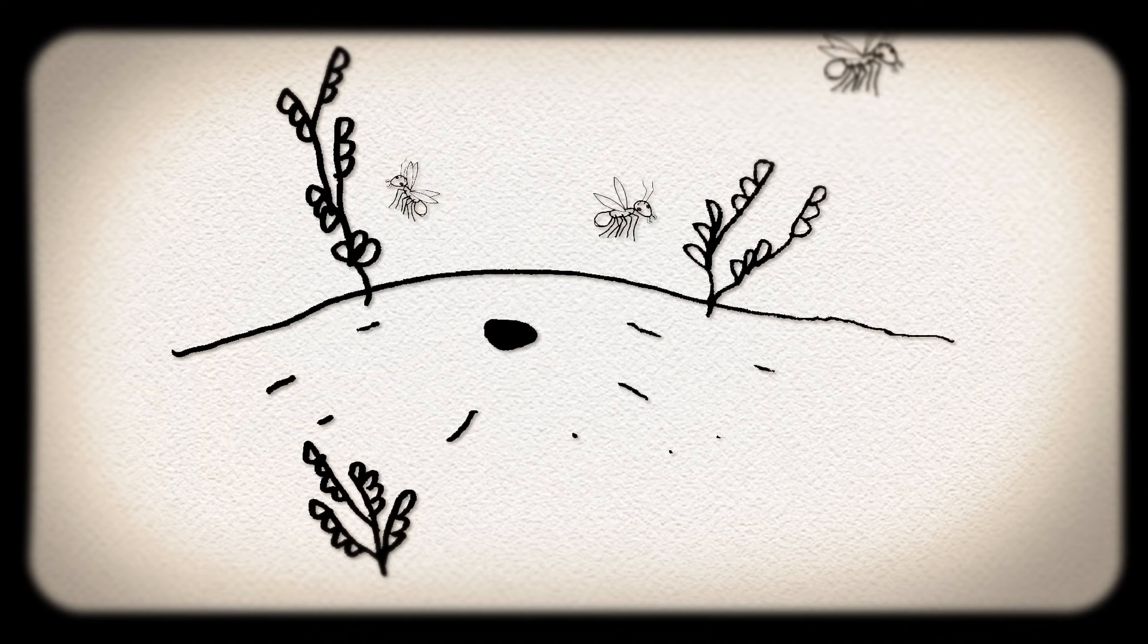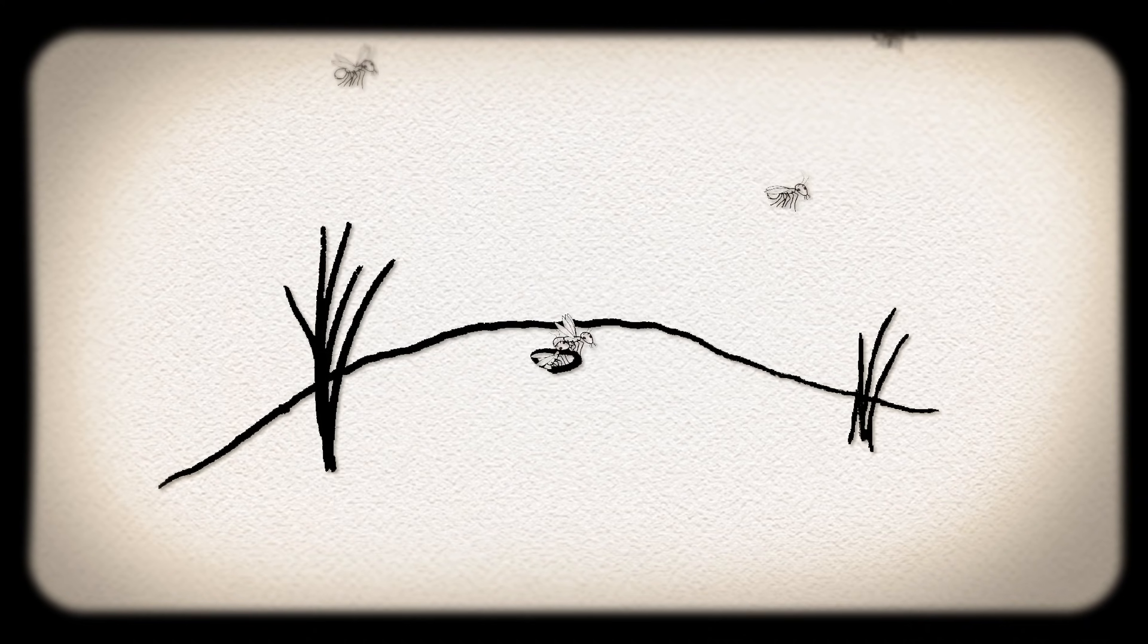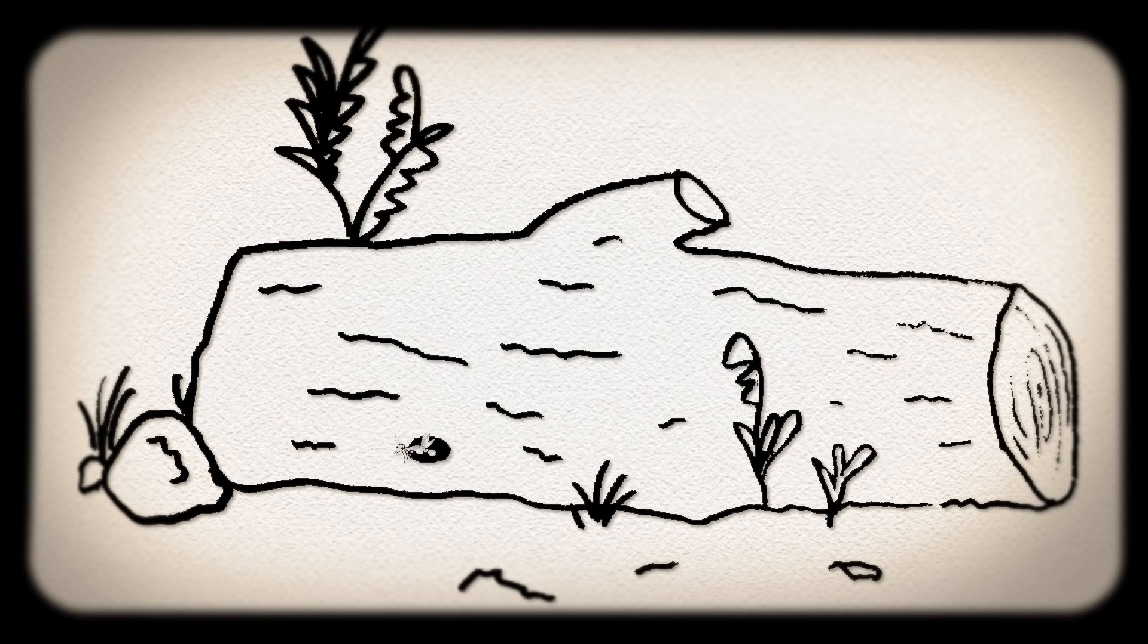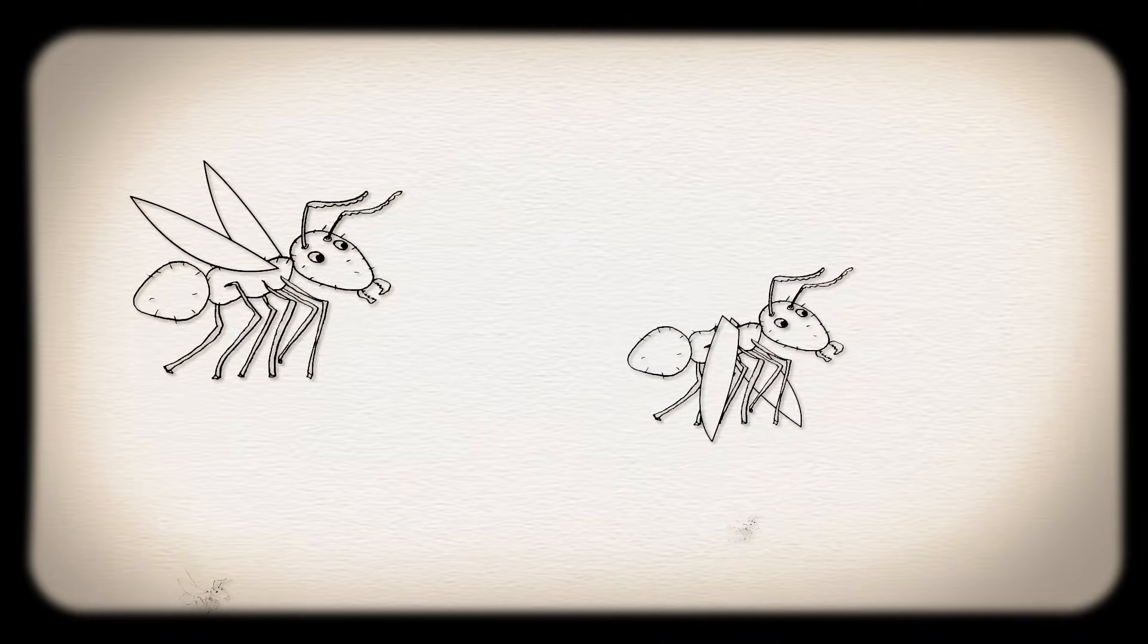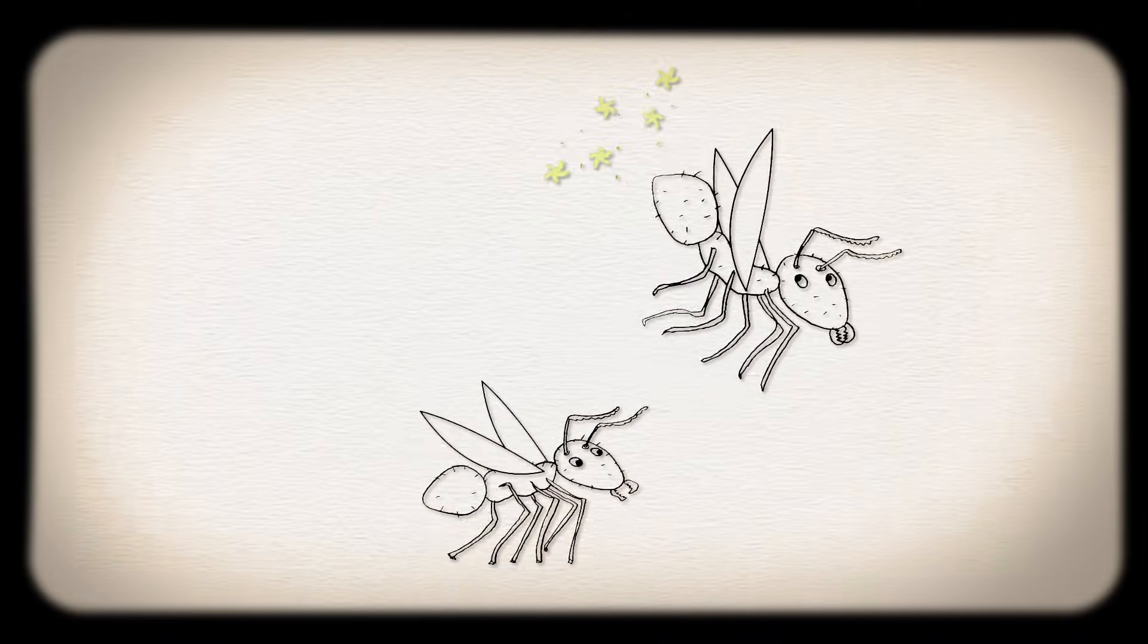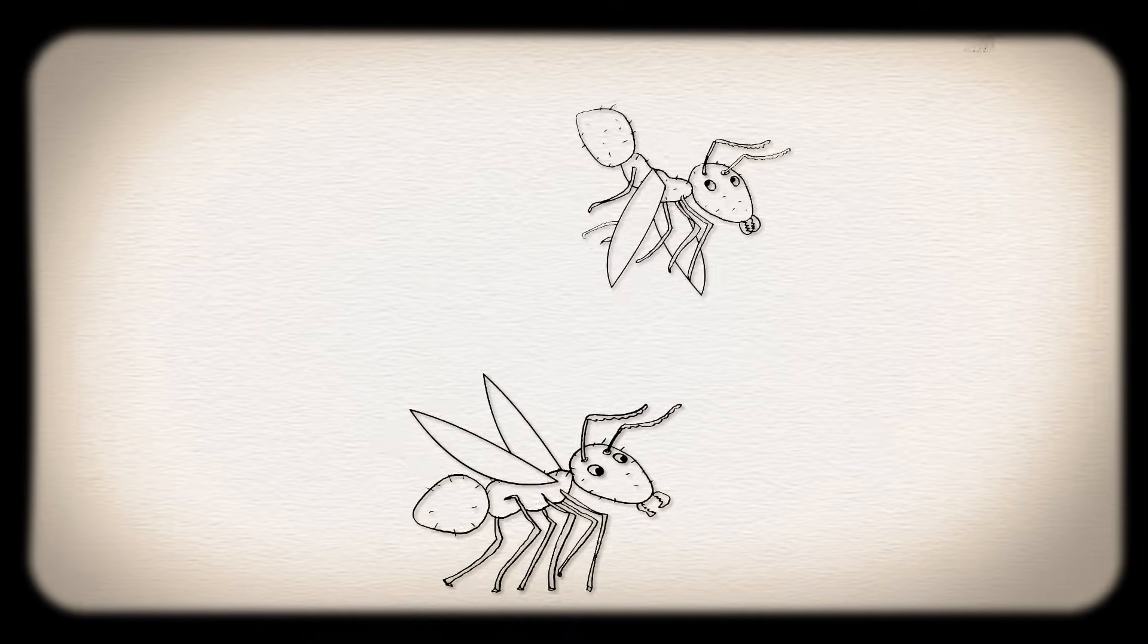In many species, all the winged males and winged virgin queens from all the nearby colonies in the population each leave from their different nests and meet at a central place to mate, using pheromones to guide each other to a breeding ground.